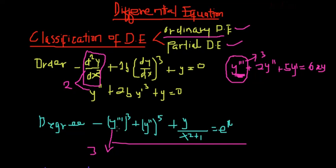For the degree, we look at the exponent of the highest order derivative. You can see y double prime raised to the power 3, and y triple prime raised to the power 5. We look at the highest order derivative — which is y triple prime — and it is raised to the power 5. Wait, actually the highest order is differentiated 3 times and that highest order term is raised to the power 5, so the degree of this differential equation is 5.